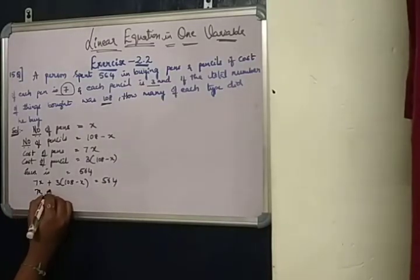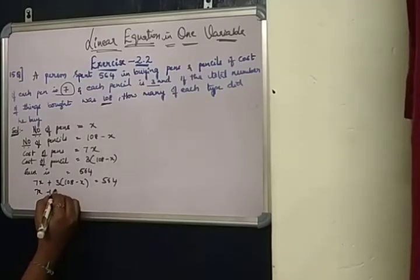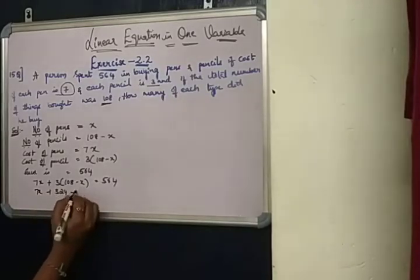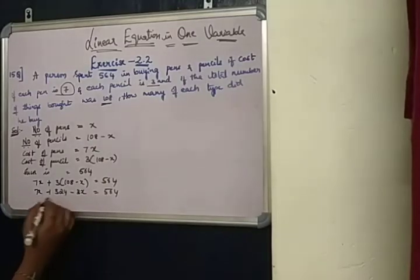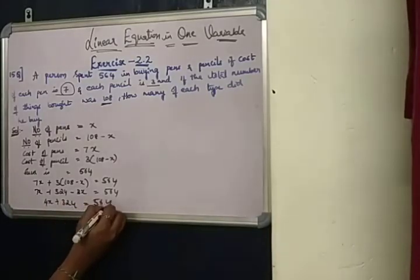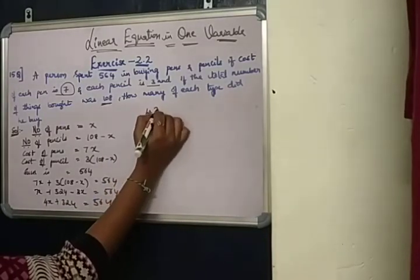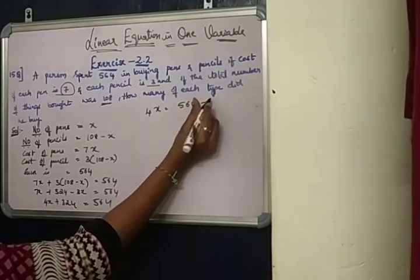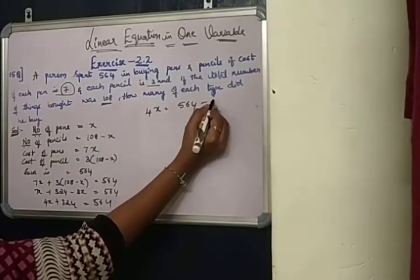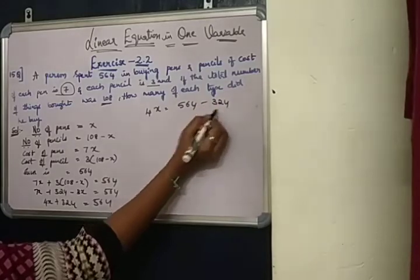7x plus 3 into 108 is 324 minus 3x equals 564. 7x minus 3x is 4x plus 324 equals 564. Transpose to the right-hand side, it becomes minus. 564 minus 324...